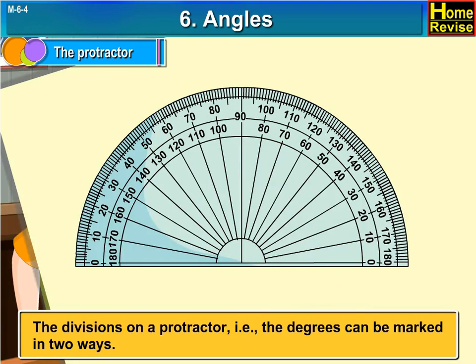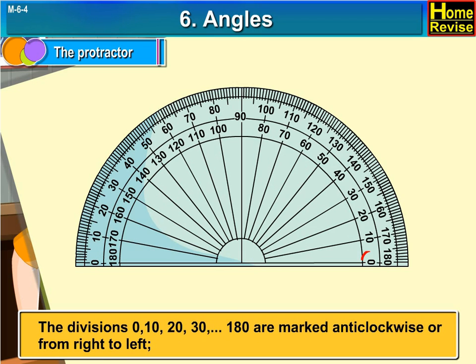Students, the division on a Protractor, that is the degrees, can be marked in two ways. The divisions 0, 10, 20, 30, so on up to 180 are marked anti-clockwise or from right to left.